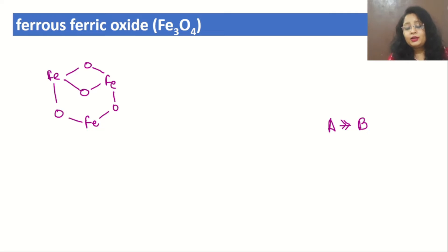B will become slightly negative and A will become positive. We will apply this concept here. Whatever is more electronegative will take the electron and become negative. In the case of iron and oxygen, oxygen is more electronegative, so the electron will move towards oxygen.